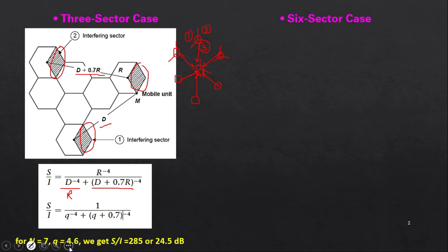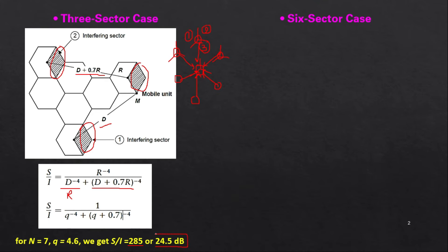Substituting q = 4.6, which corresponds to the seven-cell reuse pattern, we get S/I = 2.85, which is approximately 24.5 dB. In the previous case with an omnidirectional antenna, we were getting around 17 dB, and now we are getting 24.5 dB — which is greater than the minimum acceptable level of 18 dB required for good voice quality.